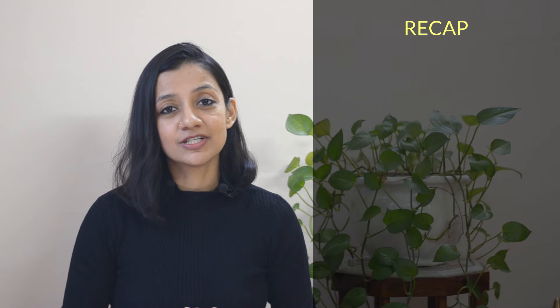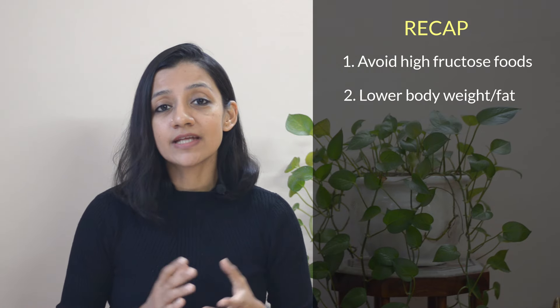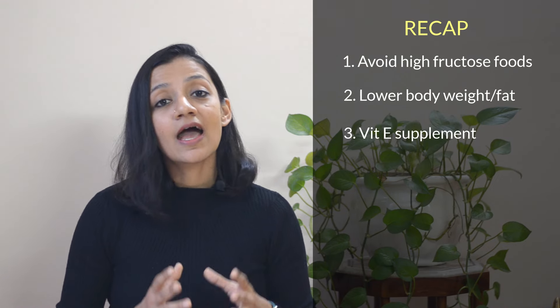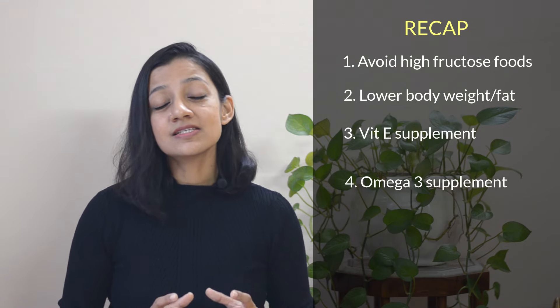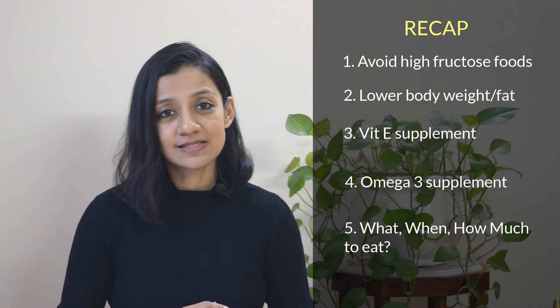A quick recap of my top five tips for preventing, managing, and reversing fatty liver disease: limit consumption of high fructose packaged and processed foods; work towards lowering your body weight and body fat percentage; consider supplementation with vitamin E and omega-3; and focus on what you eat, how much you eat, and when you eat your meals. I hope you found this video useful — leave a comment, give it a thumbs up, and I'll see you in the next video.